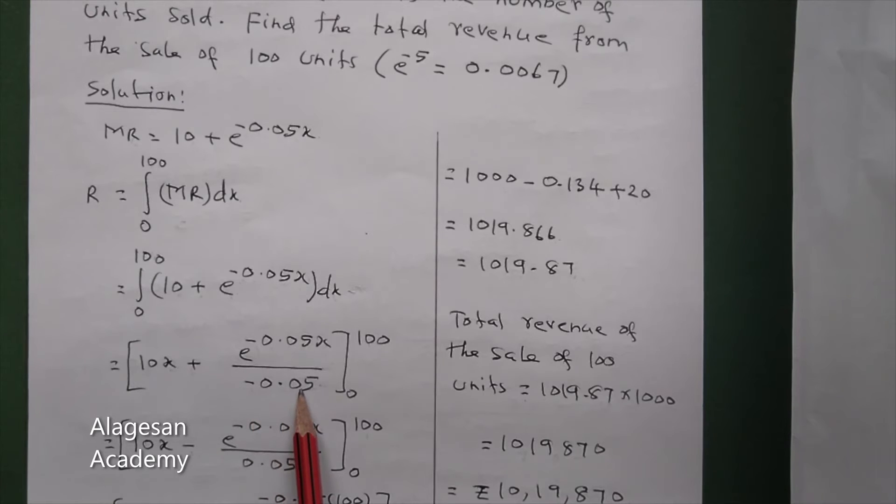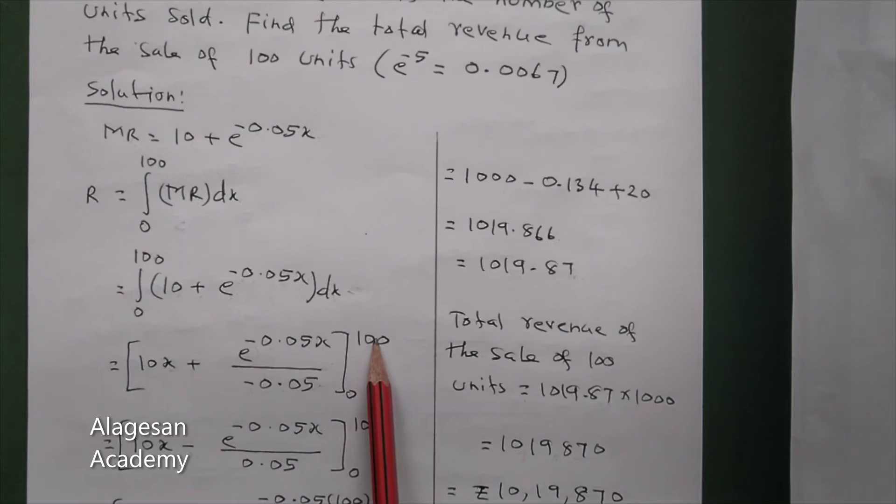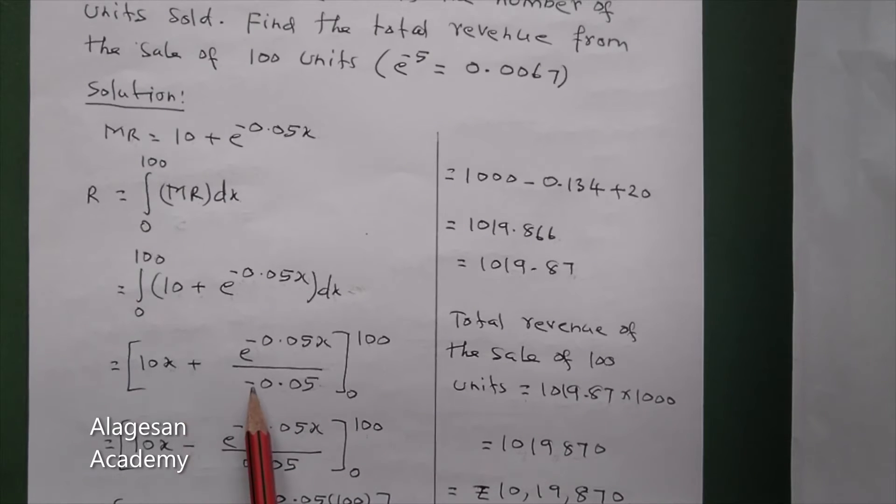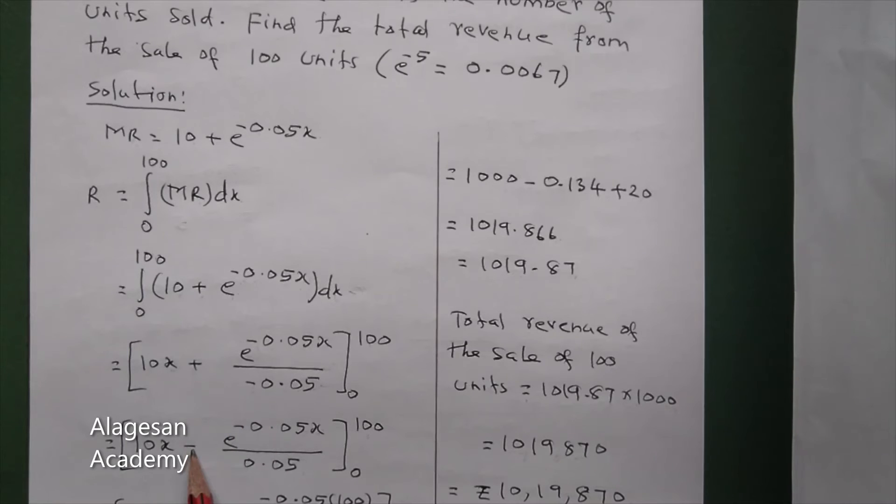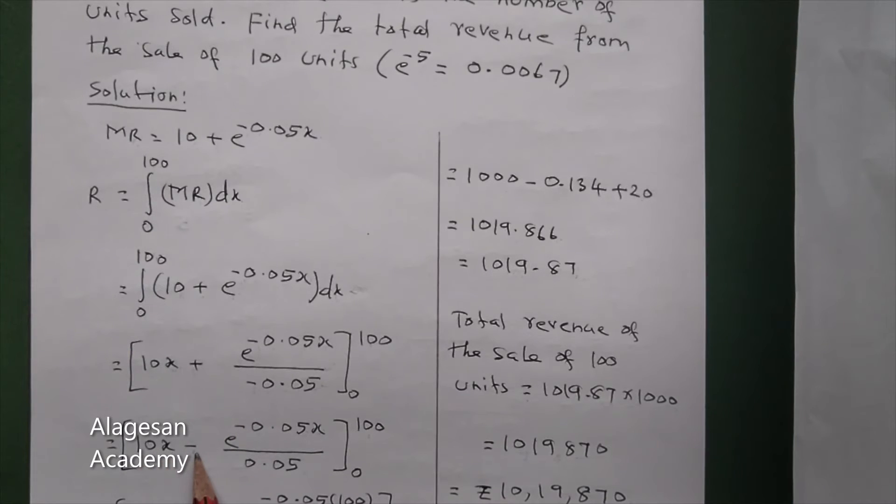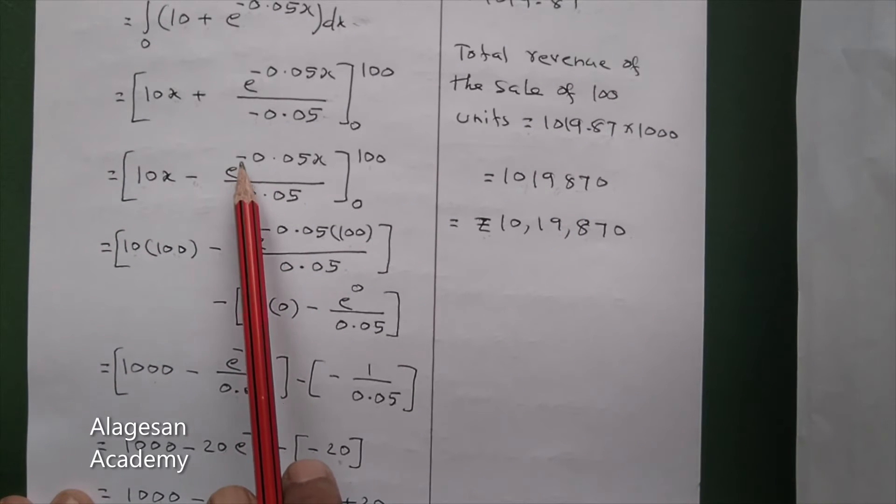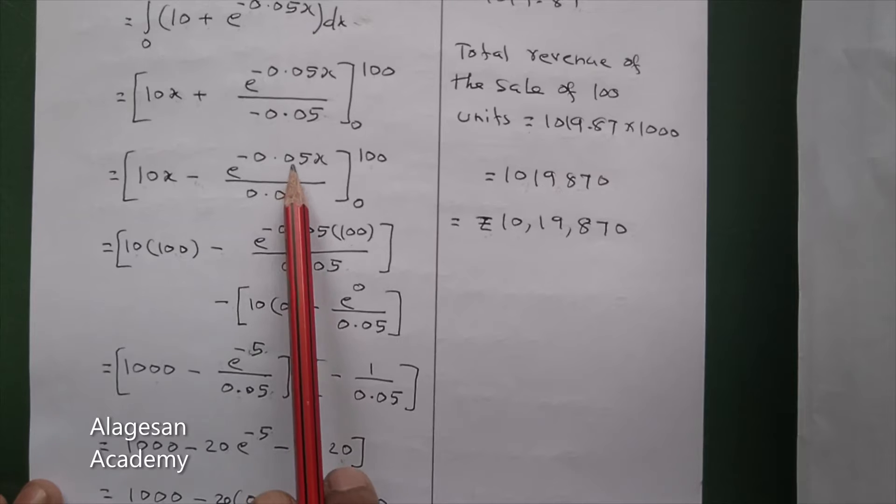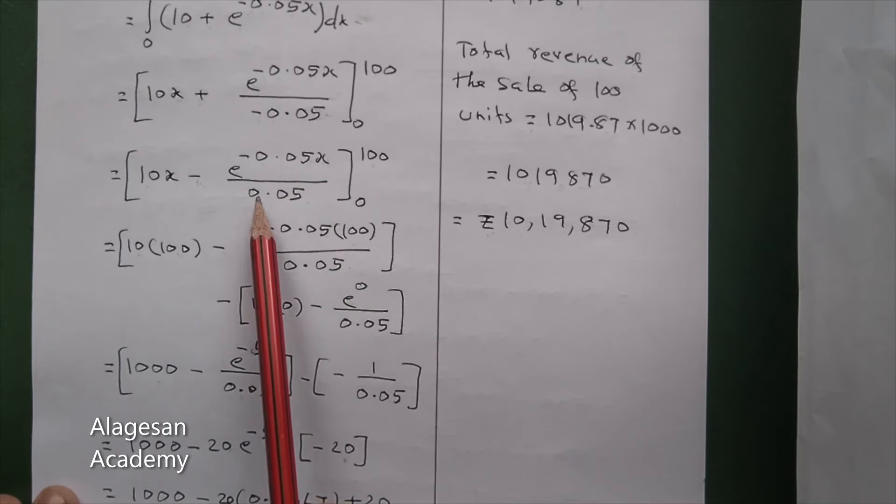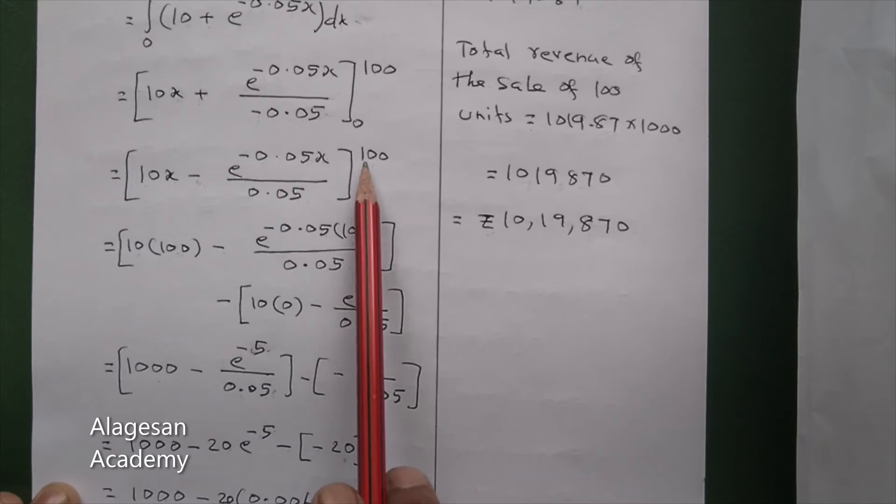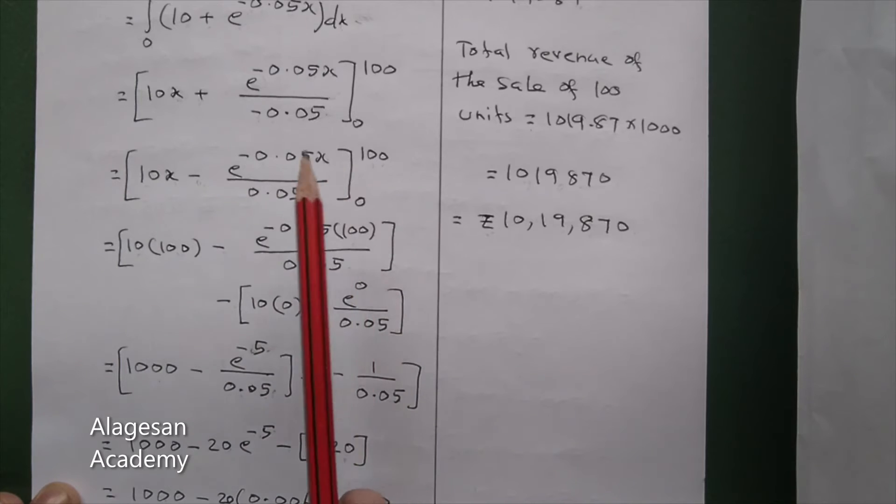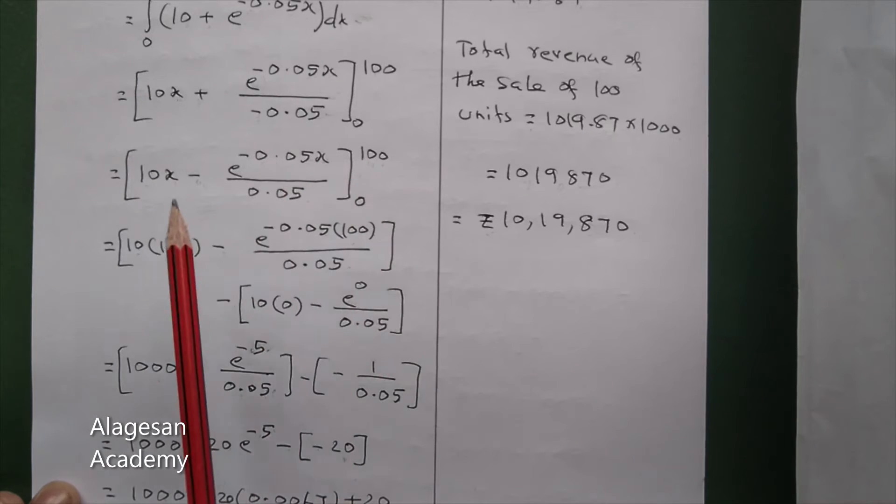So 10x minus e power minus 0.05x by 0.05, limit 0 to 100. Apply the upper limit, so 10 times 100 minus e power minus 0.05 times 100 divided by 0.05.